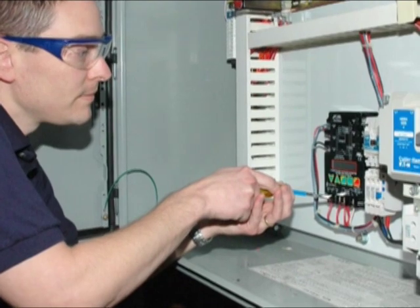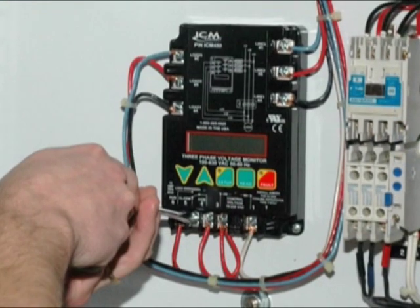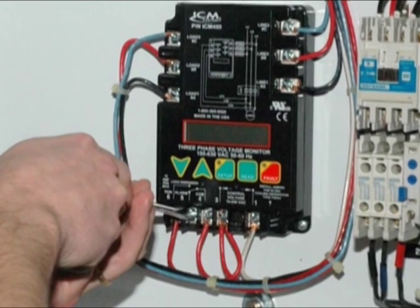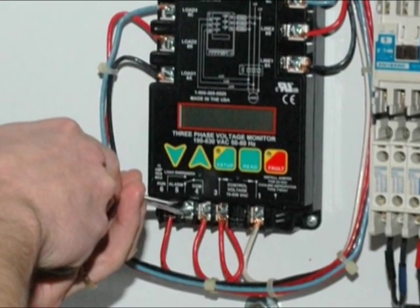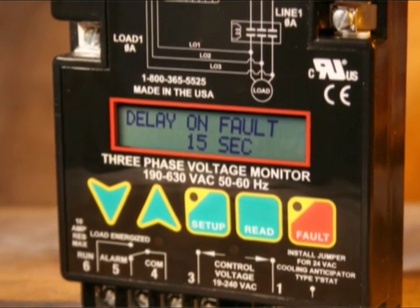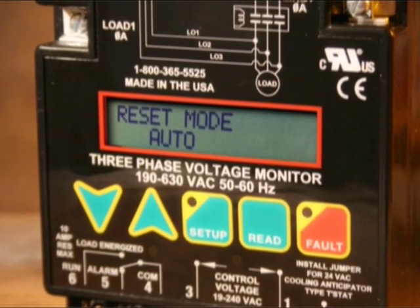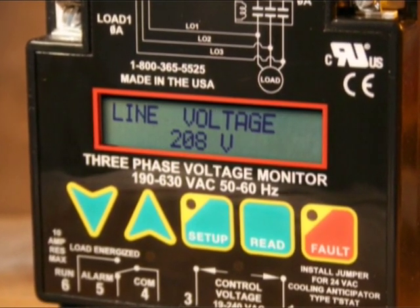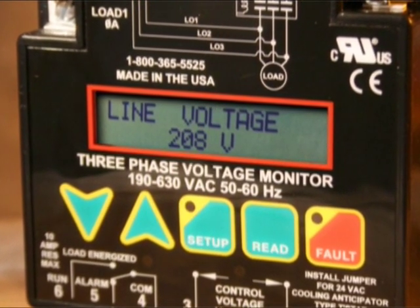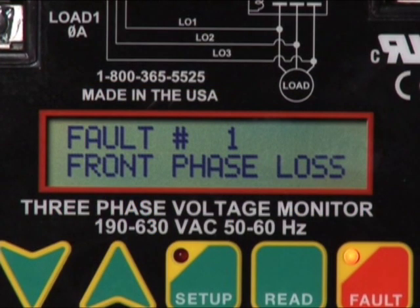ICM 450 motor protection is easy to install. Just mount it right inside the control cabinet, run connections to the line side and load side power lines, and connect the control circuit. The reliable high-temperature LCD display simplifies system setup. It takes just seven easy push-button steps to program the line voltage, maximum allowable voltage imbalance, under/over percentage, and more. The display can also scroll through the last 25 fault events, a big help when troubleshooting an elusive problem.